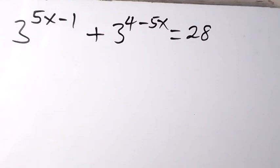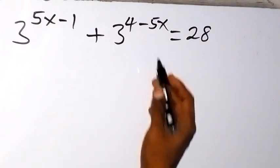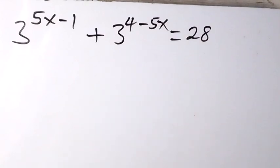Good evening viewers, thank you for joining us. Here we want to solve this problem: finding the value of x. 3 raised to the power 5x minus 1, plus 3 raised to the power 4 minus 5x, equals 28.